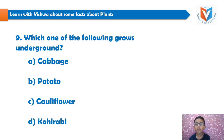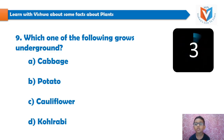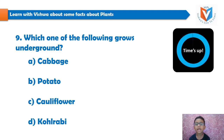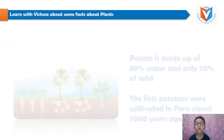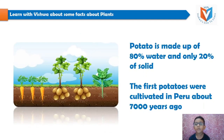Which one of the following grows underground? Cabbage, potato, cauliflower, kohlrabi. And your 5 seconds time starts now... time's up. And the answer is potato. Potato is made up of 80% water and only 20% solid. The first potatoes were cultivated in Peru about 7,000 years ago.